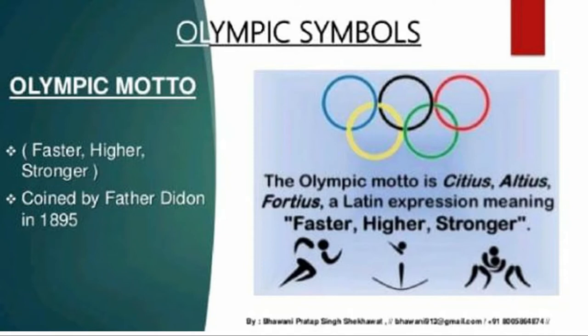The color of each ring was proposed by Pierre de Coubertin himself. However, it is important to emphasize that Pierre de Coubertin never said or wrote that the colors of the rings were linked with different continents. So it is merely a misconception that each color relates to a certain continent. The Olympic motto is inscribed under the emblem, which consists of three Latin words.